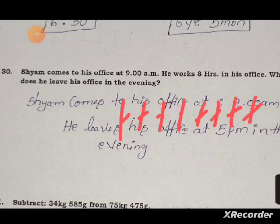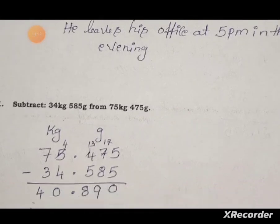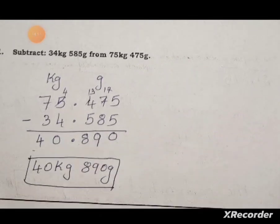The answer is 5 PM in the evening. Next: subtract 34 kg 585 grams from 35 kg 475 grams.